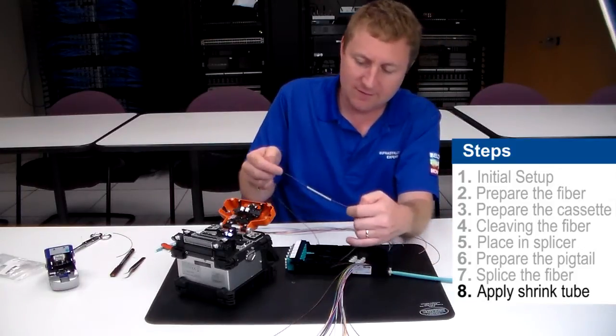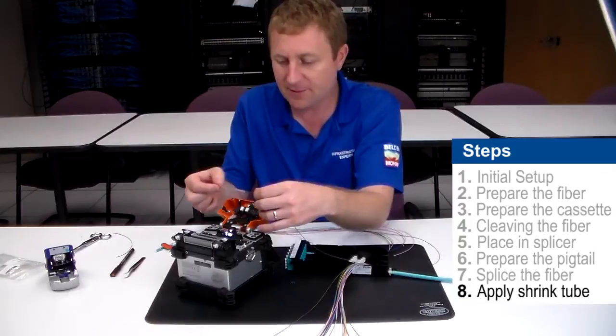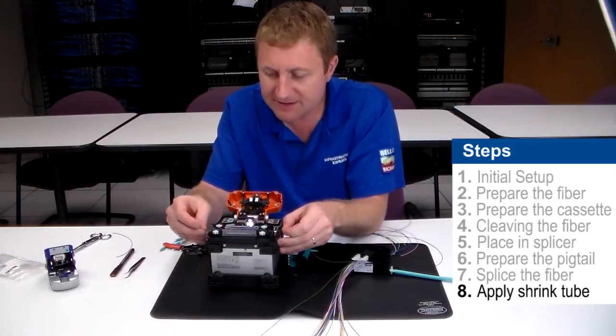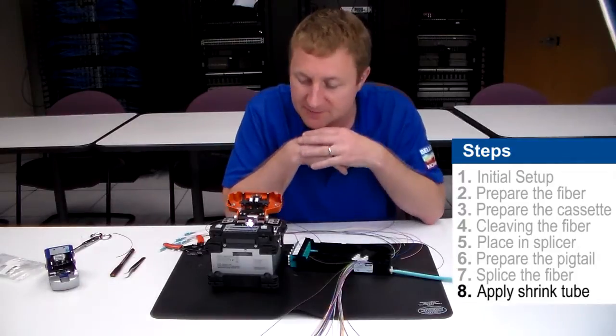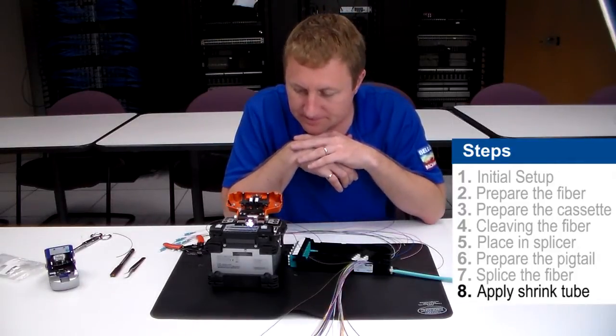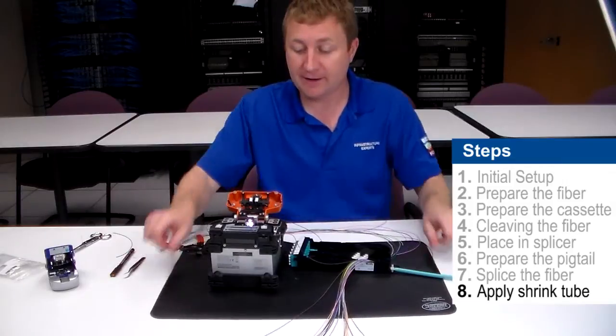So I want to keep some tension on it as I feed that shrink tube over it. Slide the shrink tube over, keeping some tension on the fiber. Center my splice in my tube and close the oven and we're going to wait for it to shrink.